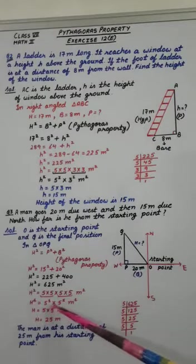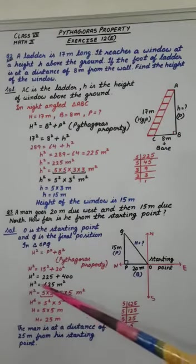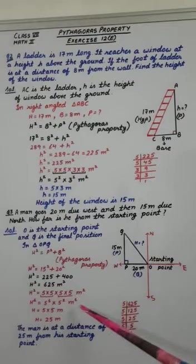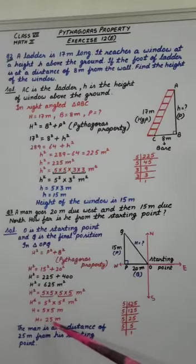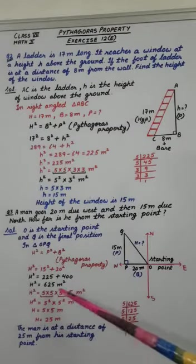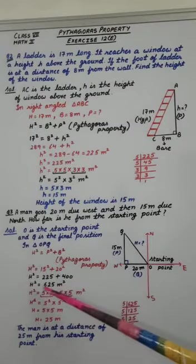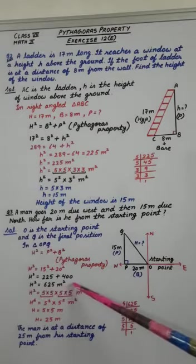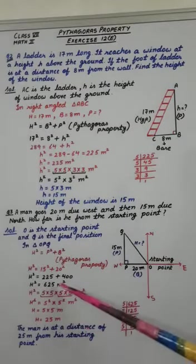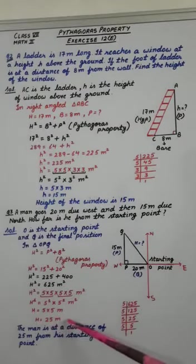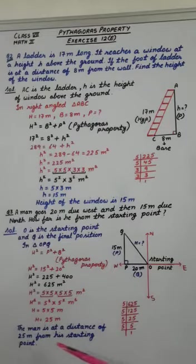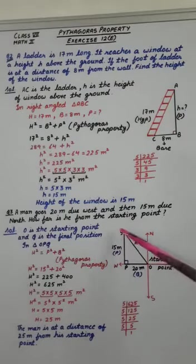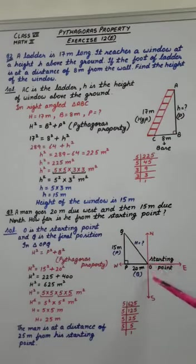Now, both sides we have squares, so we can directly remove them. Answer is H equals 5 into 5, that means 25 meter. And if we know directly that 625 is the square of 25, we can write directly this as answer. So, the man is at a distance of 25 meter from his starting point. This distance is 25 meter.